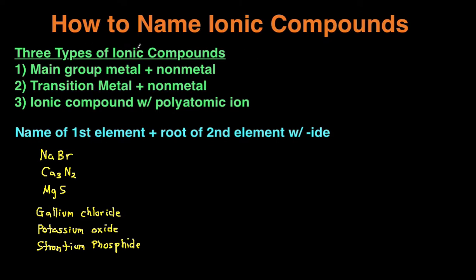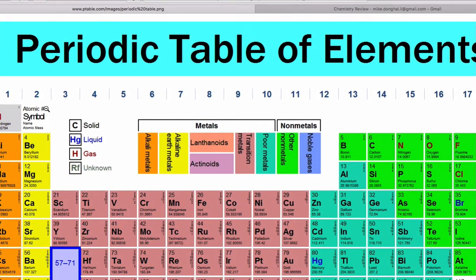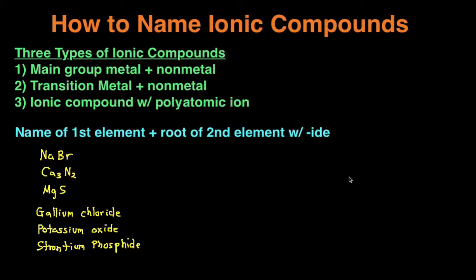There are three different types of ionic compounds. The first type is when you have a main group metal with a non-metal. The second type of ionic compounds is when you have a transition metal with non-metals.